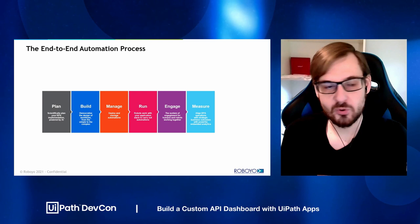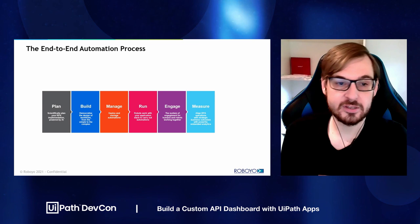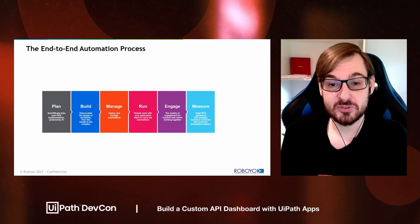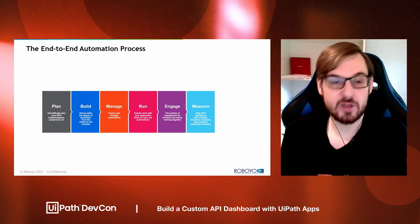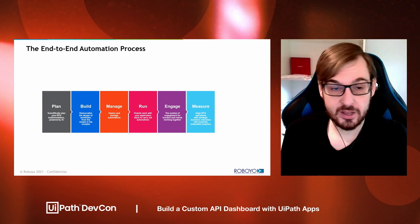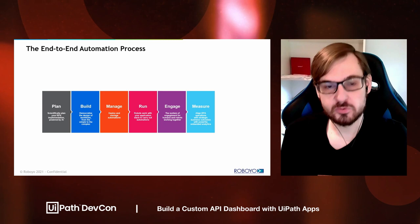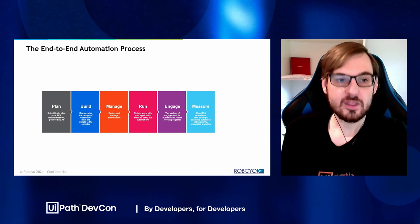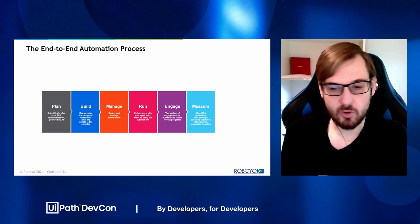Let's jump into the end-to-end automation process. We all know this one, where we have the different phases. Normally Apps is put into the Engage category, but I feel there is a lot more that can be done with Apps. With the orchestrator dashboard, we are going more into the Manage and Run category — managing which robots are online, and also what we can do in the Deploy part, such as packages being created and deployed out of an app across different orchestrator instances.